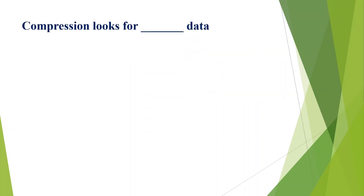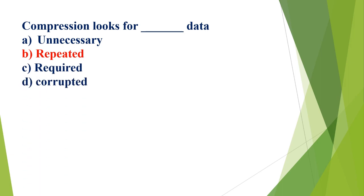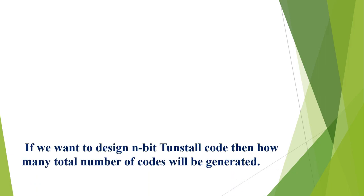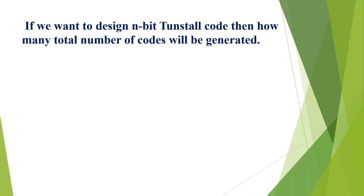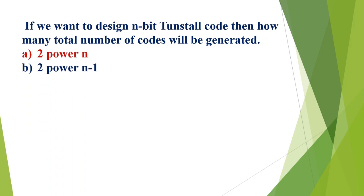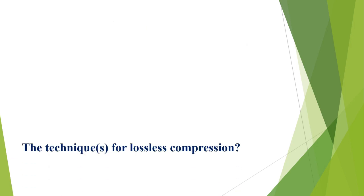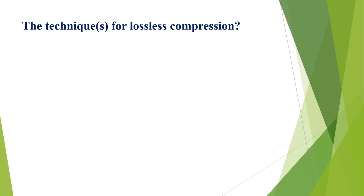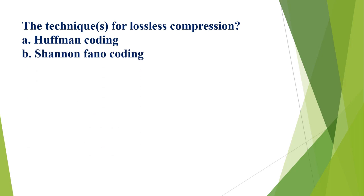Compression looks for blank data: A) unnecessary, B) repeated, C) required, D) corrupted. The correct option is B, repeated. If we want to design an n-bit Turnstall code, how many total number of codes will be generated? A) 2^n, B) 2^(n-1), C) 2n, D) n-1. The correct option is A, 2^n.